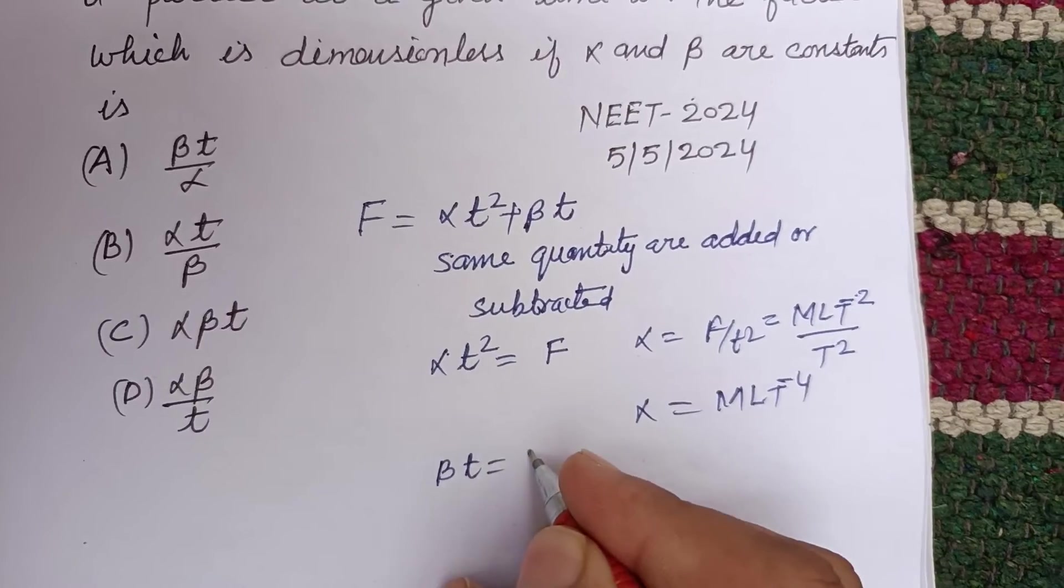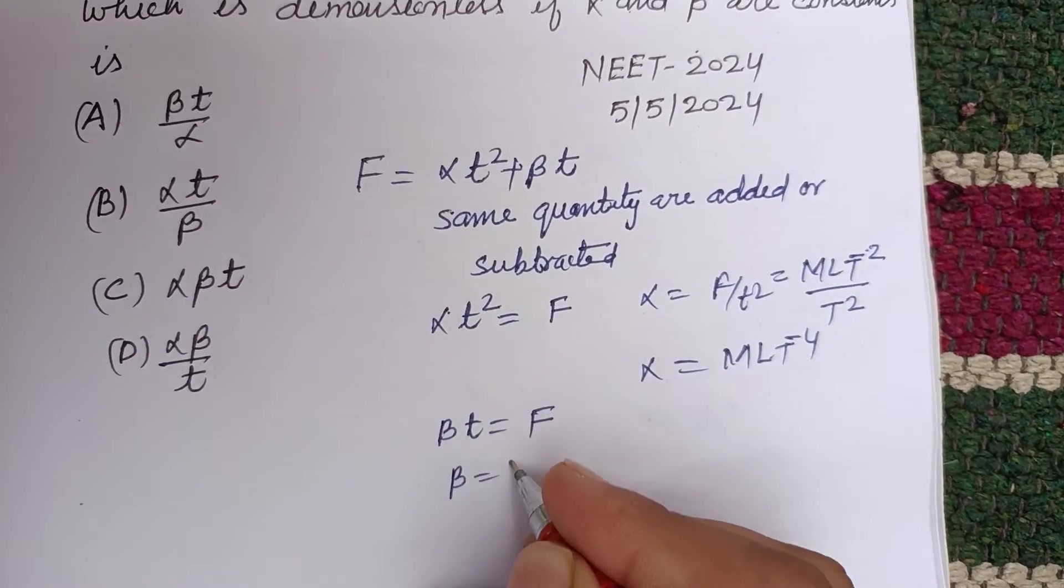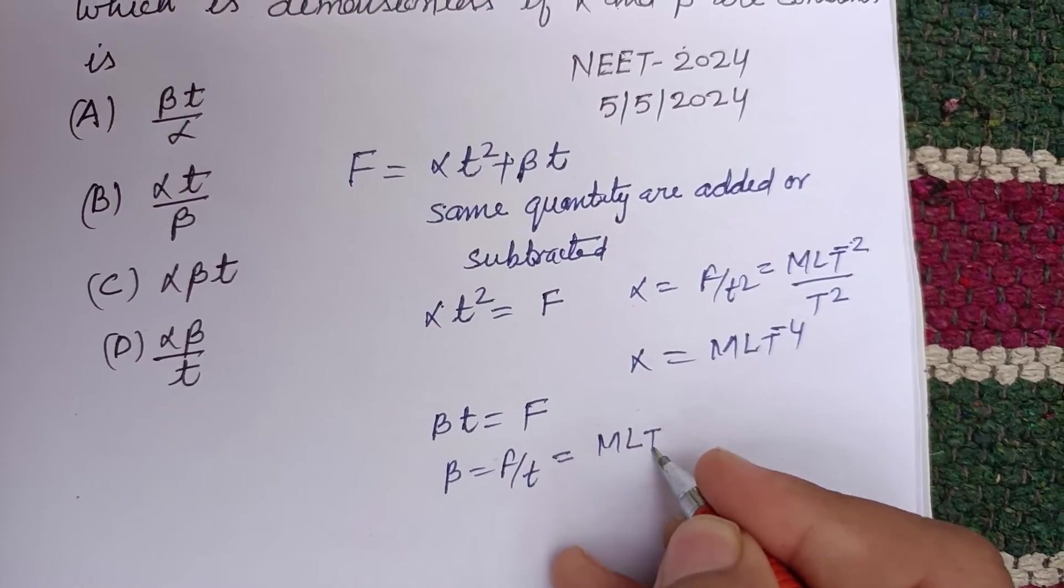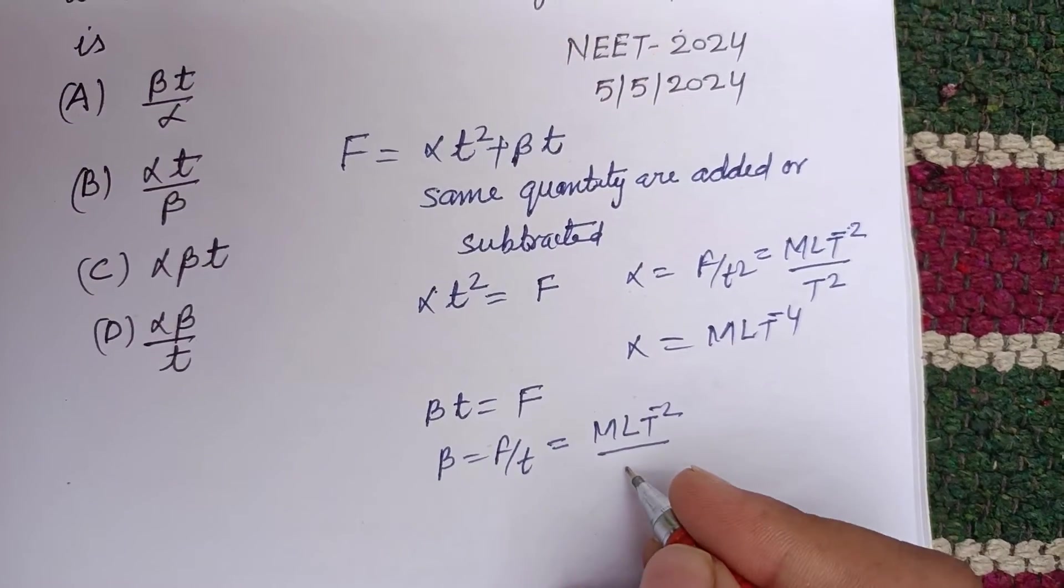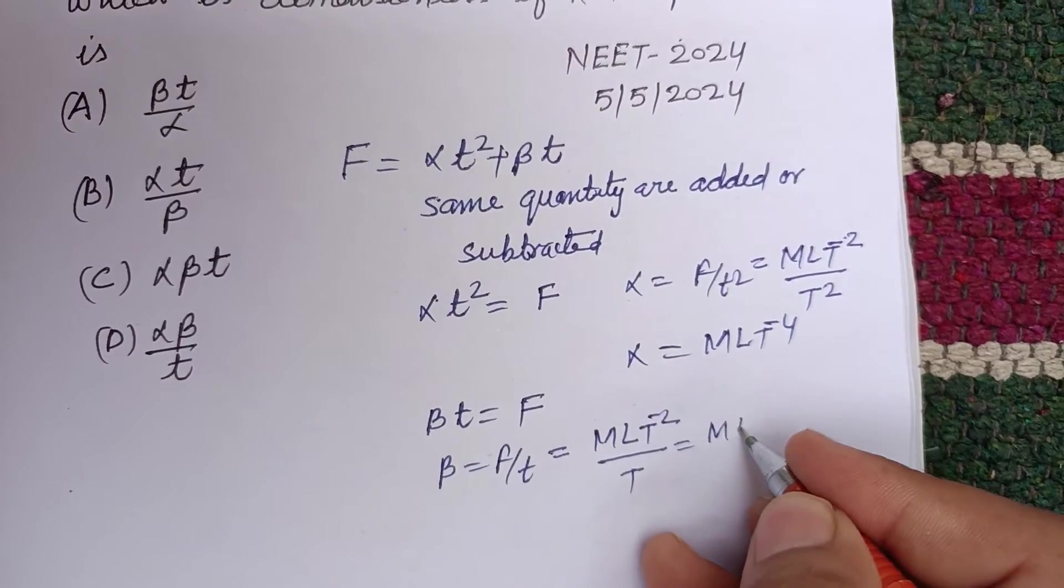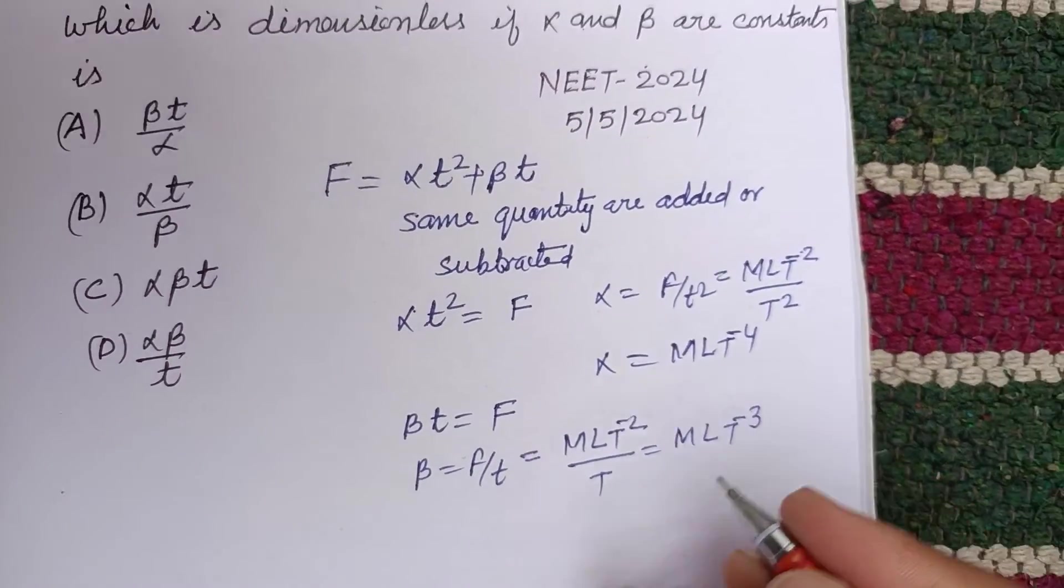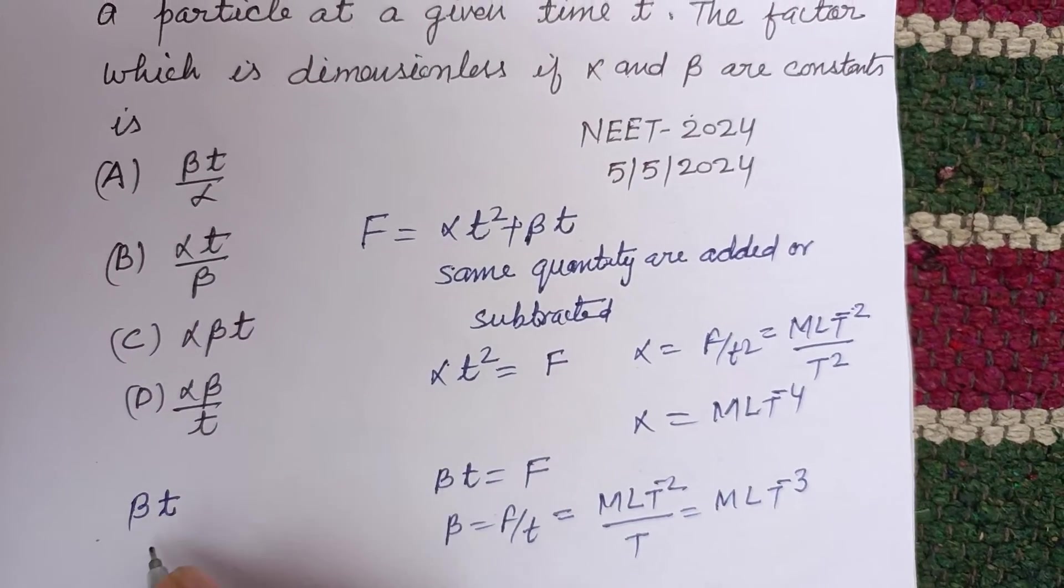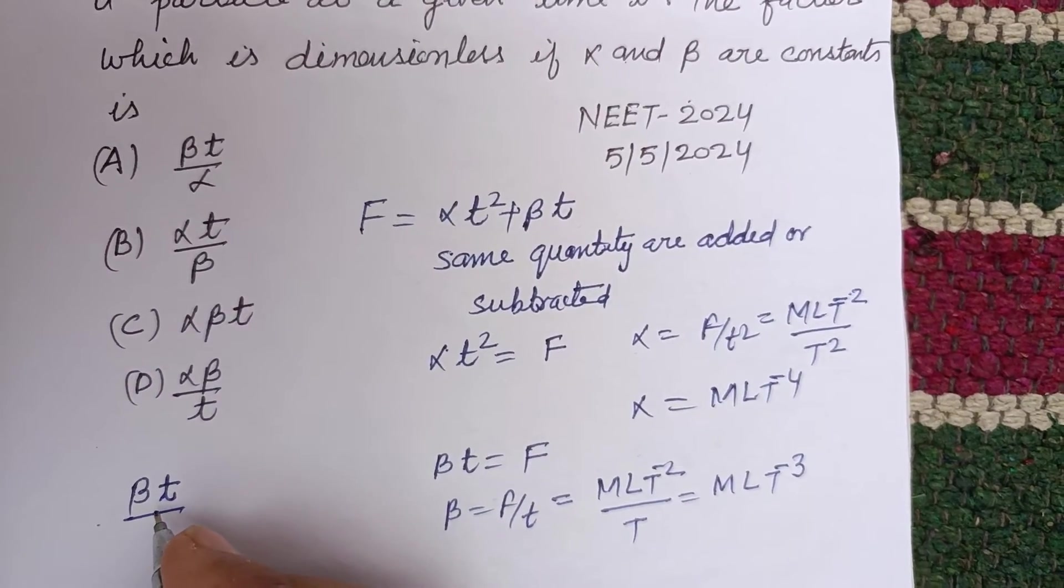From this, beta t is equal to also force, so beta equals F over t. MLT minus 2, the dimension of force upon t, so this is MLT minus 3. Now we require that which is dimensionless. Alpha beta t upon alpha, so beta is...